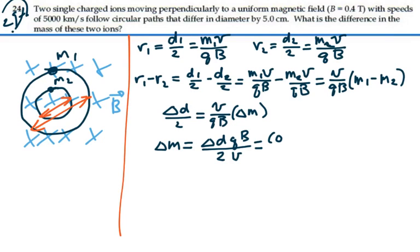Difference in diameter is 5 centimeters, 0.05 meters. The charge, they're singly charged, 1.6 times 10 to the minus 19 coulombs. Magnetic field is 0.4 tesla.